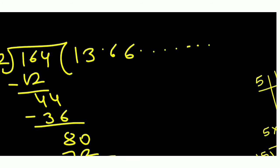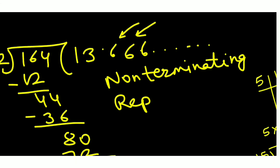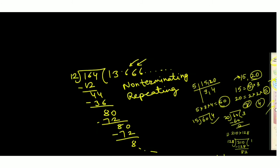After dividing 164 by 12, we get 13.666... — the dots continue, so the division does not end. This means it is non-terminating. Also, the digit 6 keeps repeating, so it is also recurring. Therefore, 164/12 is non-terminating recurring.